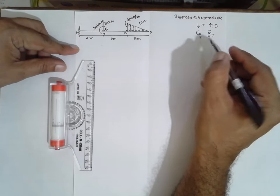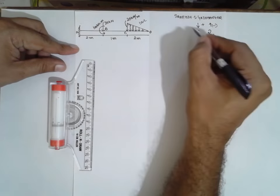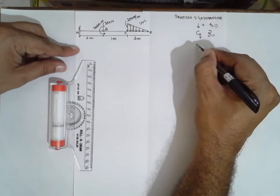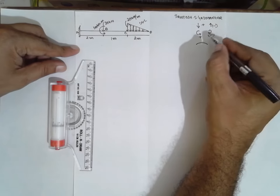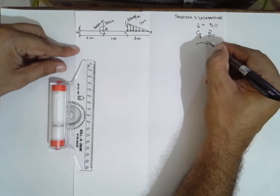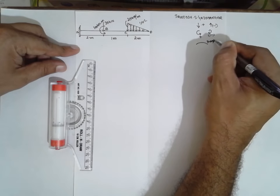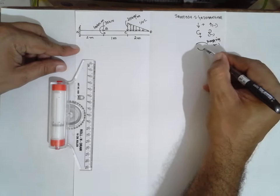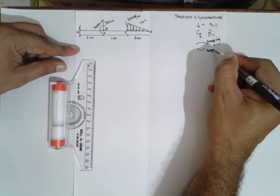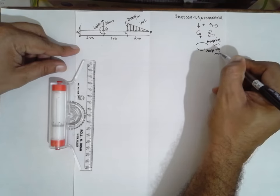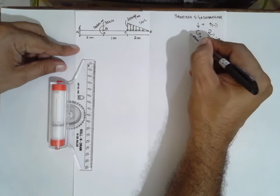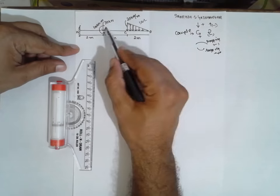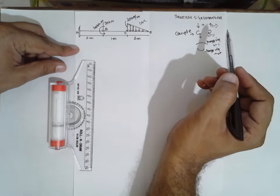For bending moment, I am considering hogging as negative and sagging as positive.